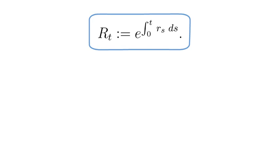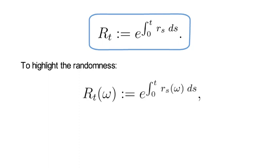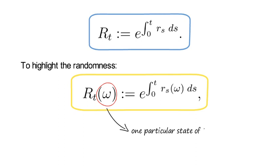If we wanted to highlight the randomness in the little r's explicitly, we could write the last expression as the following equation here. Where the little omega is just one particular state of the world. But it just highlights that the little r is a random variable and therefore capital R will be random as well.